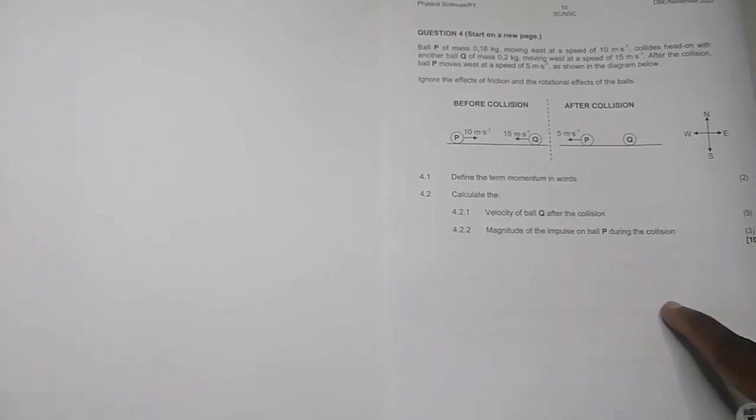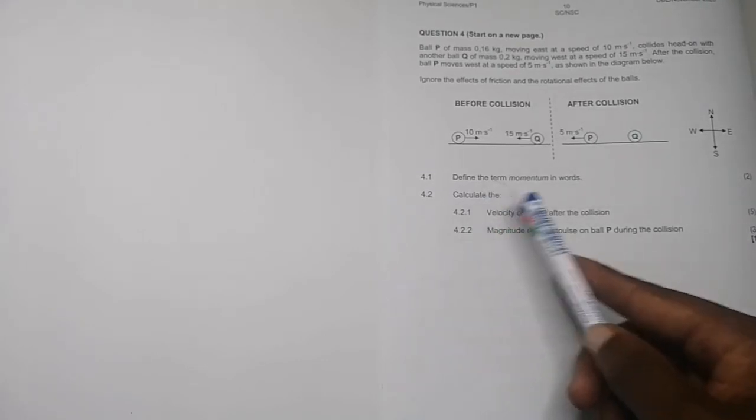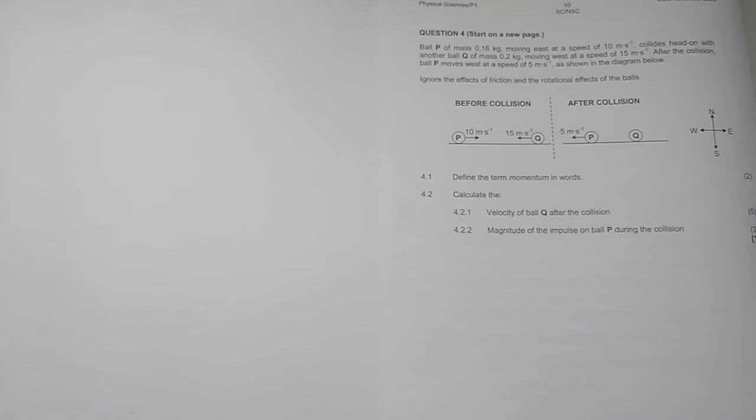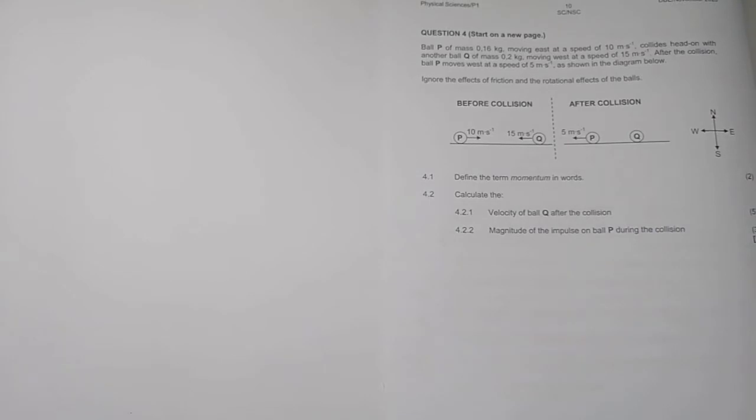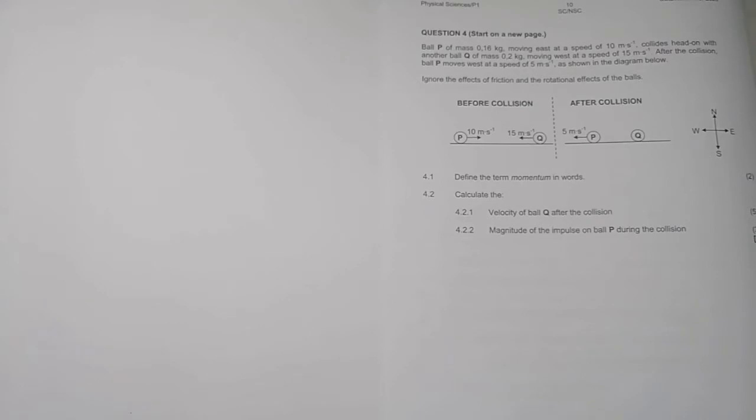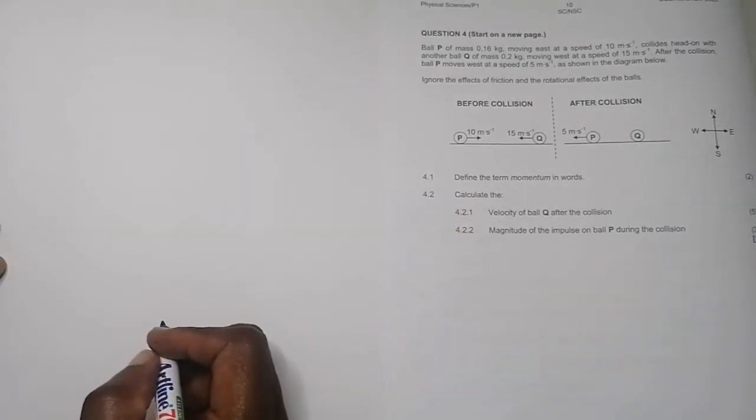They say define the term momentum in words. Momentum is the product of a body's mass and its velocity. You must keep in mind that momentum is a vector quantity, so we must quantify it in terms of its magnitude and direction. Conservation of linear momentum simply states in an isolated system, the total linear momentum is conserved, or you can say momentum before collision equals momentum after collision.